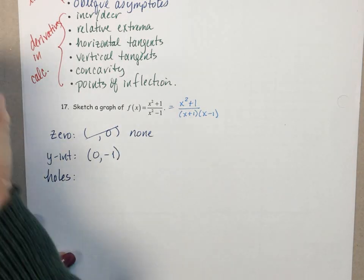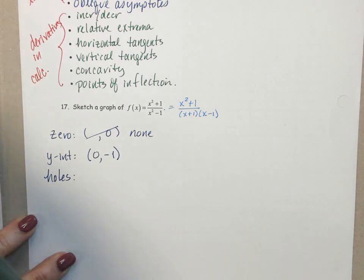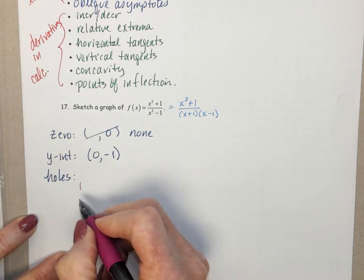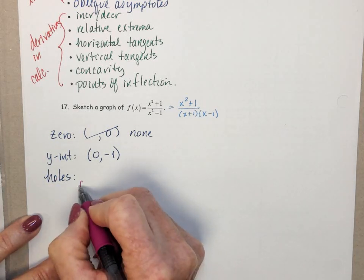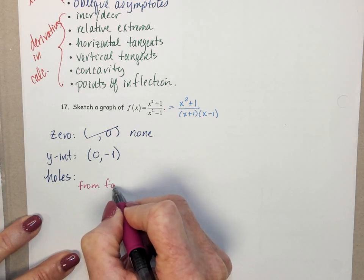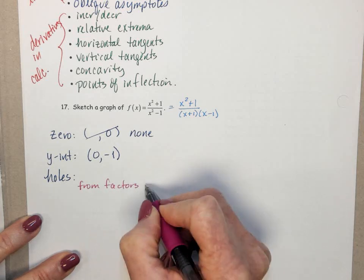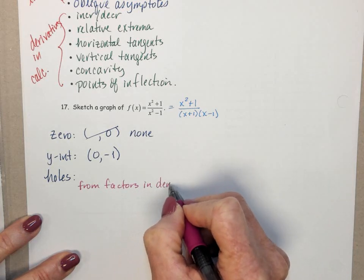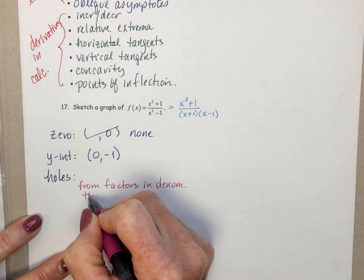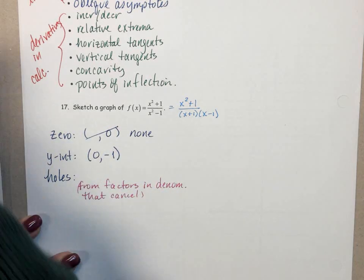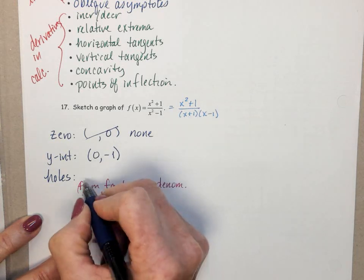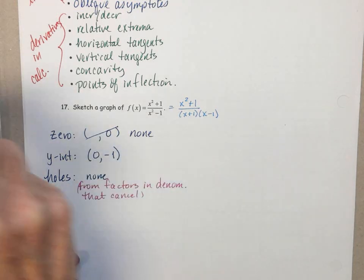Holes. Well, holes come from factors in the denominator that cancel out. And there aren't any. Nothing cancels. So there aren't any holes.